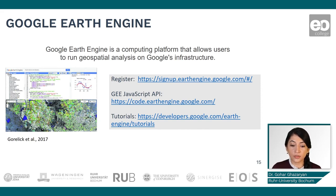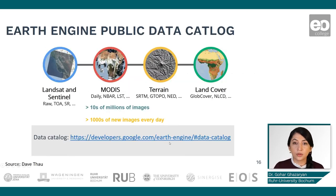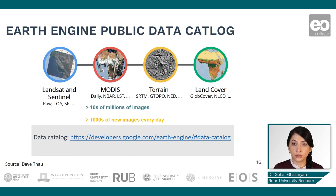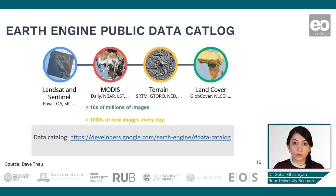You can also find several tutorials at the provided link. Besides the availability of several remote sensing datasets such as Landsat, Sentinel, and MODIS imagery in the Google Earth Engine data catalog, you can also find several other datasets such as land cover data. More information about available datasets can be found in the data catalog.